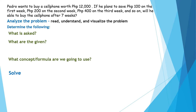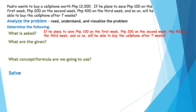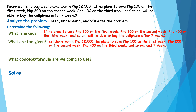Let's have another problem. Pedro wants to buy a cell phone worth 12,000 pesos. He plans to save 100 pesos on the first week, 200 on the second week, and 400 pesos on the third week, and so on. Will he be able to buy the cell phone after seven weeks? We analyze, understand, and visualize the problem. What is asked: will Pedro be able to buy the cell phone after seven weeks?